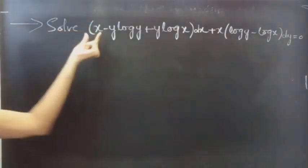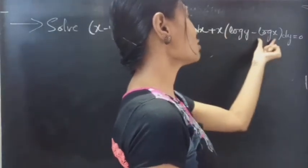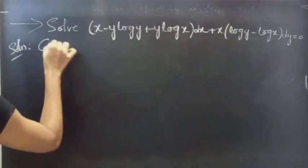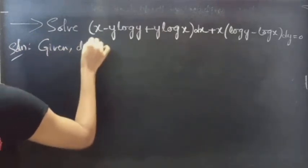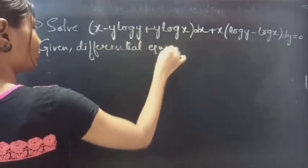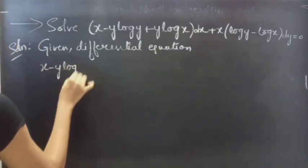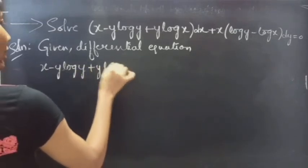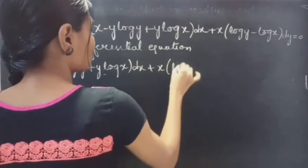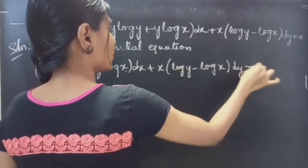Problem. Solve: x minus y log y plus y log x into dx plus x times log y minus log x into dy equals to 0.